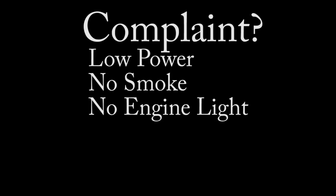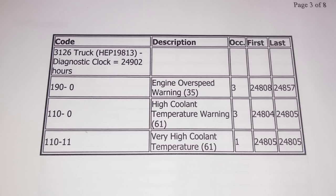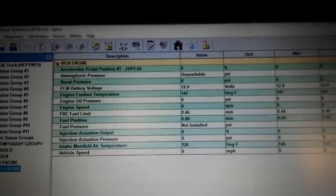So these were what they wrote down: low power obviously, no smoke — no white or black exhaust smoke — which is a good thing. Also they said there's no check engine light. So first thing I do is check for codes. They had an injector current fault for cylinder 4 with 255 occurrences, which is the max. They also had some overspeeds and high coolant temp warnings, but these were about 100 engine hours old. So I'm going to go after that injector current fault first.